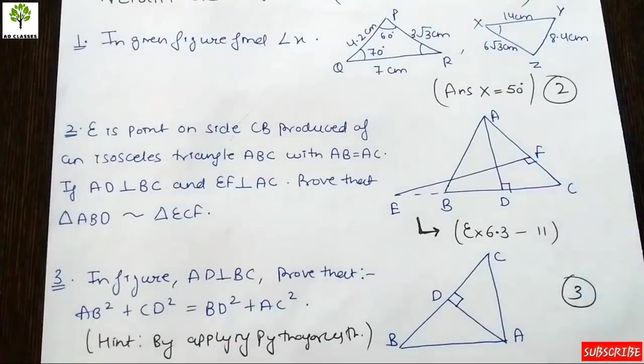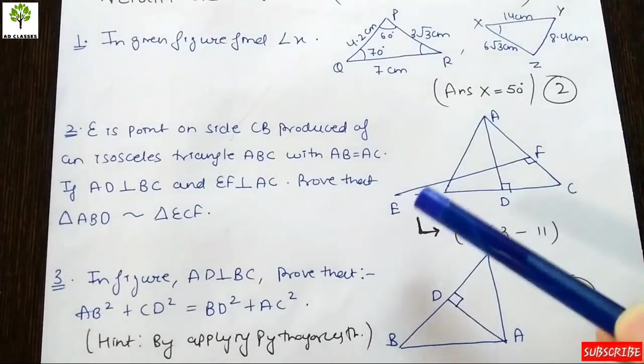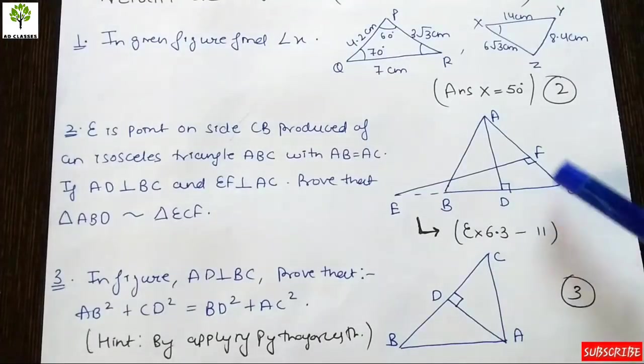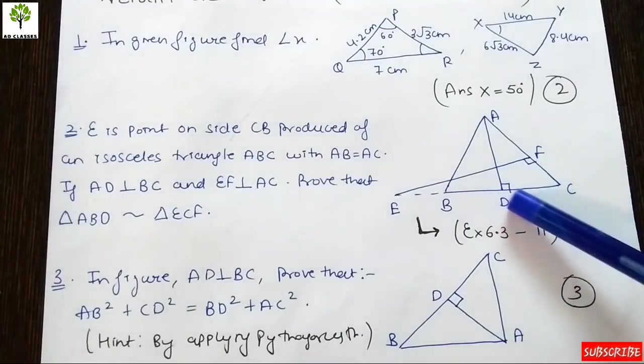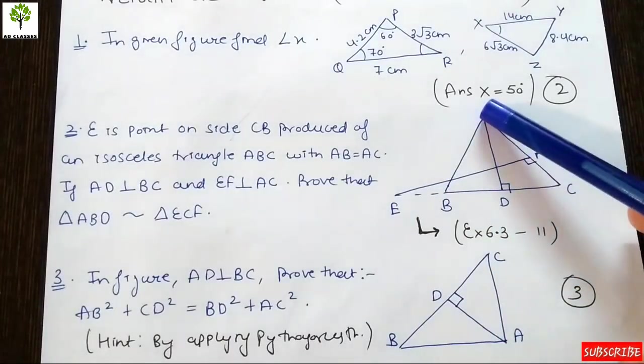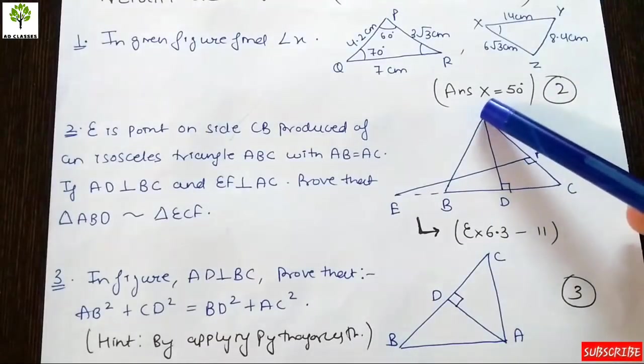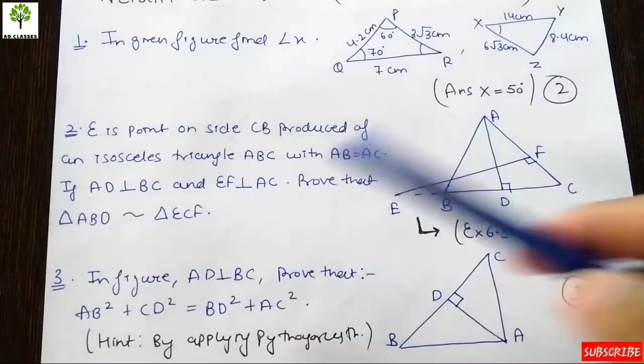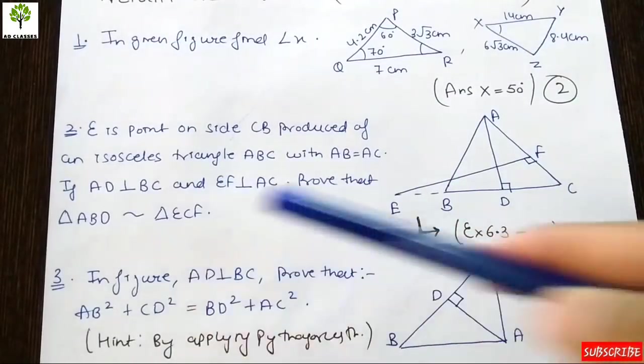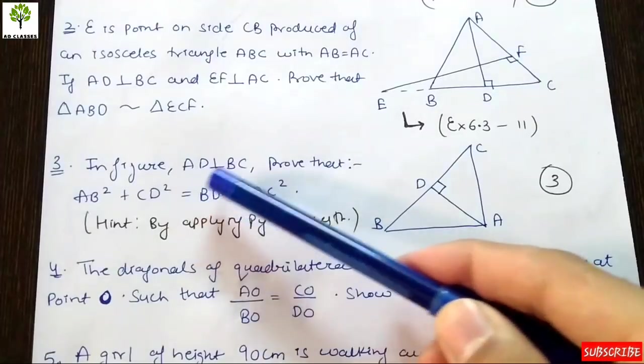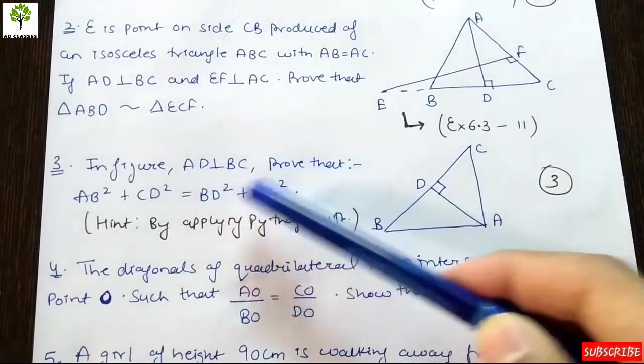First we can prove triangle ECF is similar to triangle ADC. If we look at both triangles ECF and ADC, there is one angle which is common, so we can say that both triangles will be similar. Triangle ADC and triangle ADB can also be proven similar.